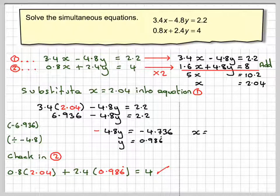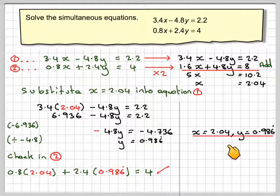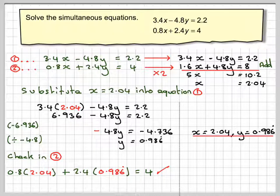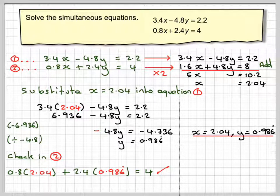So the final answer is x equals 2.04 and y equals 0.986 recurring. So this has been a video to show you how to solve simultaneous equations when the coefficients are decimals. Thank you very much for watching, and I hope you have understood.